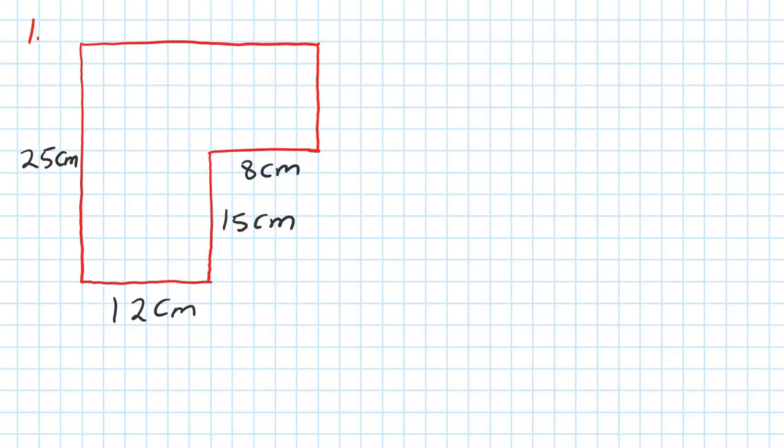To find the area and perimeter of these figures, we first find out all the missing side lengths. Step number 1 - if you look at this line here, from here to here, this 12, add this, will give me this side here.